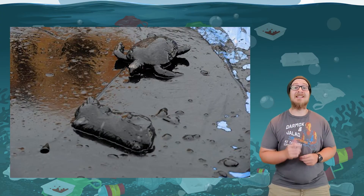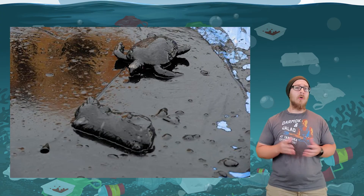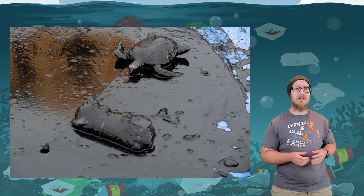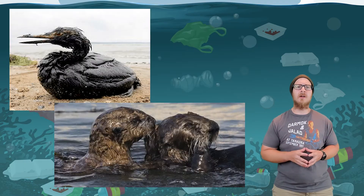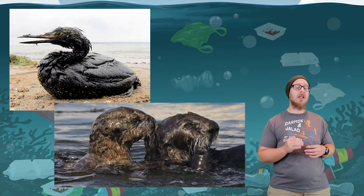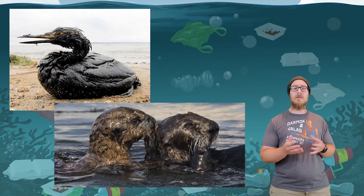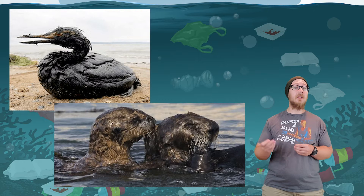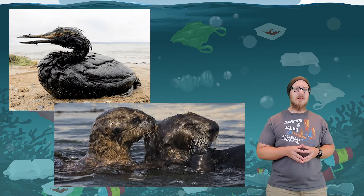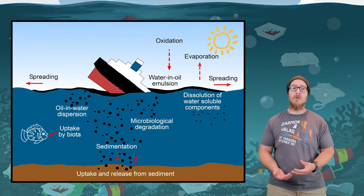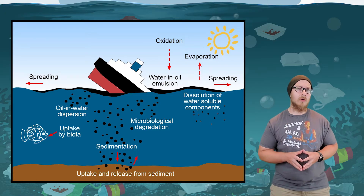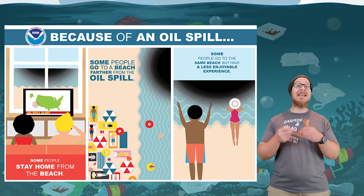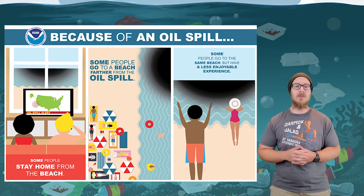Oil spills are a prominent example of water pollution. Oil spills in marine waters can cause organisms to die due to toxic hydrocarbons present in the oil. Oil that floats on the surface can coat the feathers of birds and the fur of marine mammals, reducing their insulation in cold water and preventing flight. Some components of oil sink to the ocean floor and can kill bottom-dwelling organisms. Oil that washes up on beaches can also have economic consequences on the fishing and tourism industries.